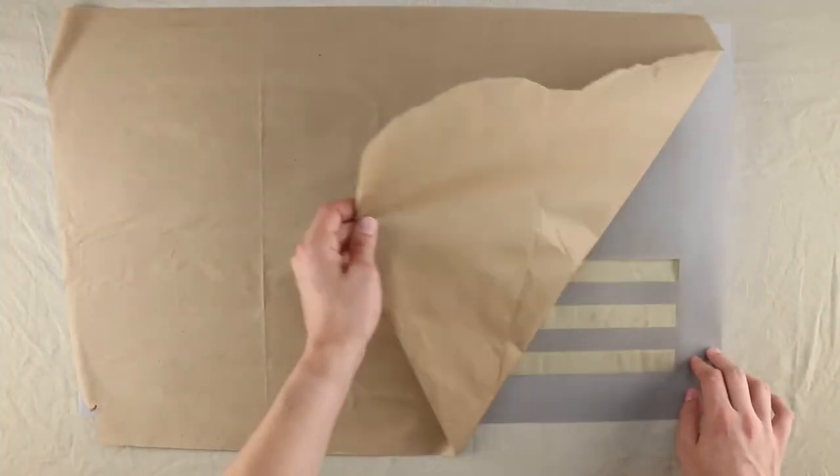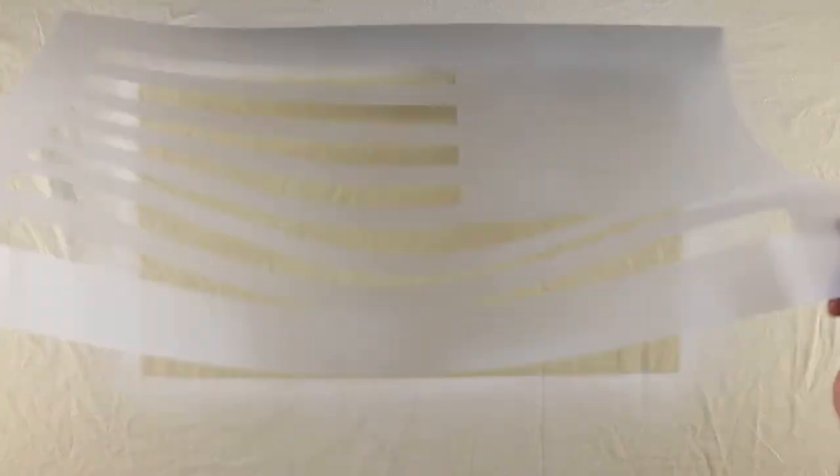Shake and spray the can from 8 to 12 inches away to coat the back of the stencil. Wait 30 seconds for the spray to get tacky, then optionally use paper to press and peel away excess adhesive.